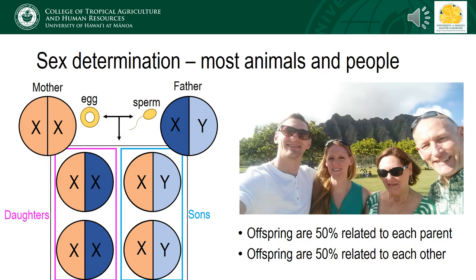Now, in humans, whether an offspring is male or female isn't the choice of the mother — it's determined by chance. We have what is referred to as the XY sex determination system. When their genes combine, the resultant embryo has a 50% chance of being a daughter or a son. This is because all females have two X chromosomes, and males have one X and one Y chromosome. All offspring inherit an X from their mom, and either an X or a Y from their dad. If you got an X from your dad, then you're a female, and if you got a Y from your dad, then you're a male. Thus, all offspring are 50% related to each parent and 50% related to their siblings.